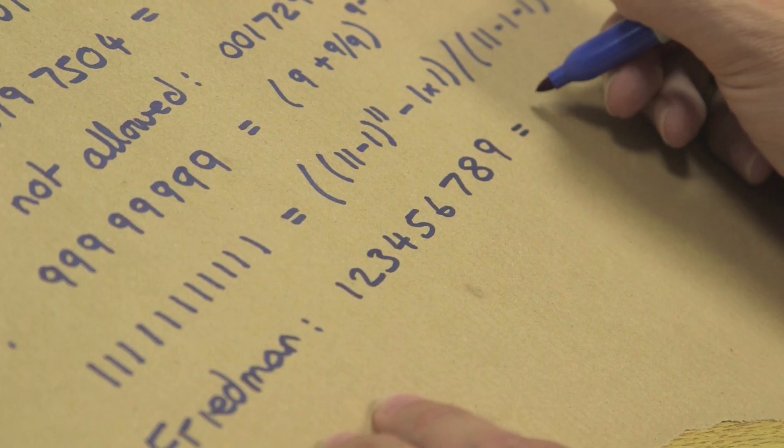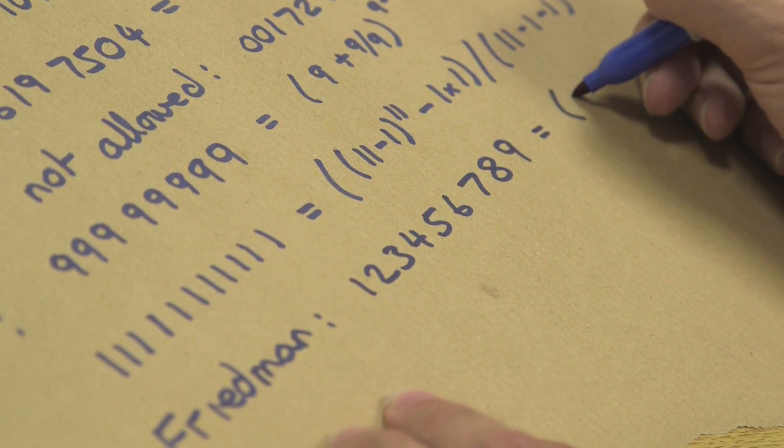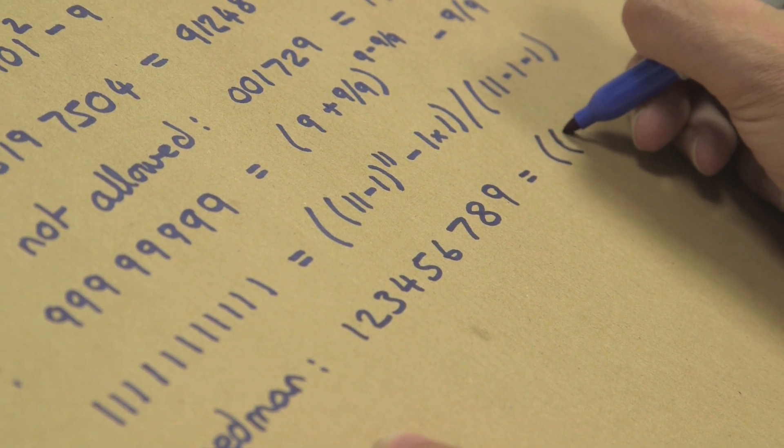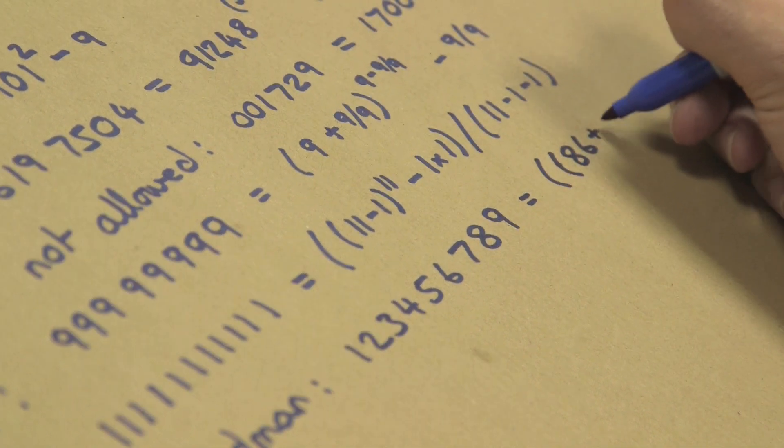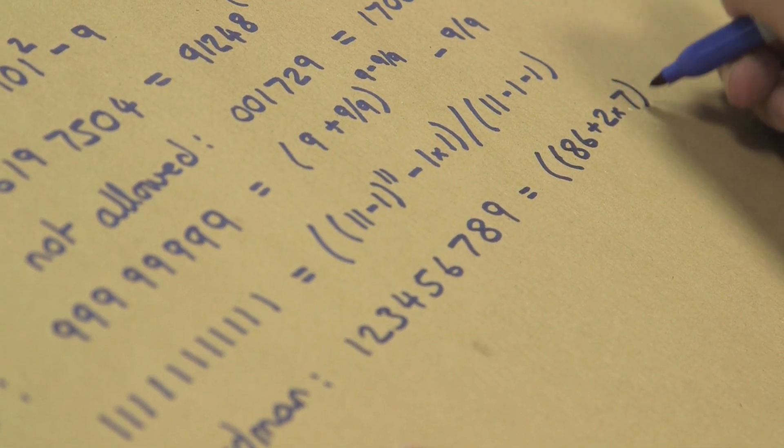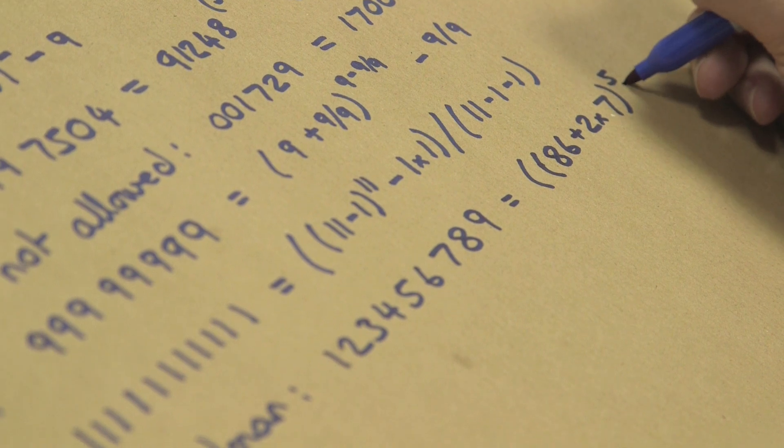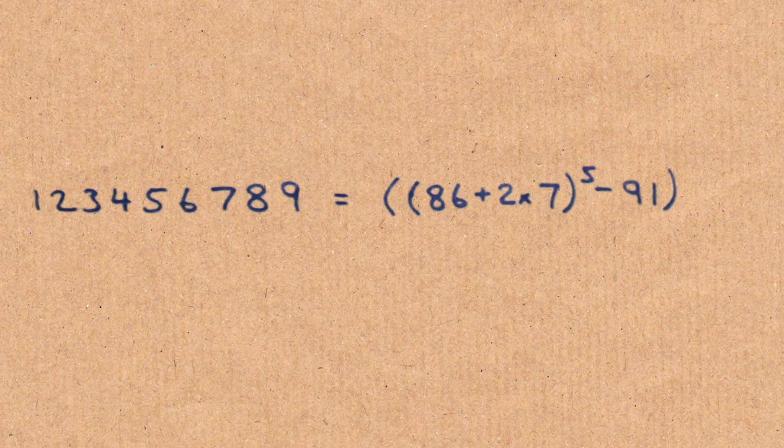So if I say 123456789, well, I can write that as a Friedman number because that's equal to, I think I need two brackets, 86 plus 2 times 7 to the power 5 minus 91, all divided by 3 to the power 4.